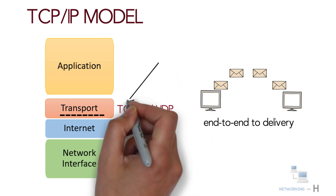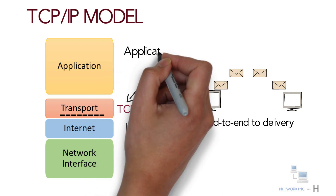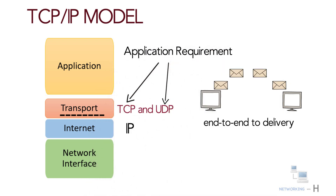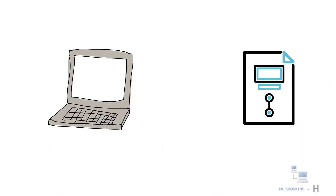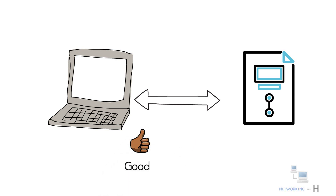Each TCP/IP application typically chooses to use either TCP or UDP based on their application requirements. You should understand the basics of how each of these transport layer protocols works. When a device or computer wants to communicate with another device, the communication between those devices needs to be good and reliable so we can guarantee that the data is received correctly.